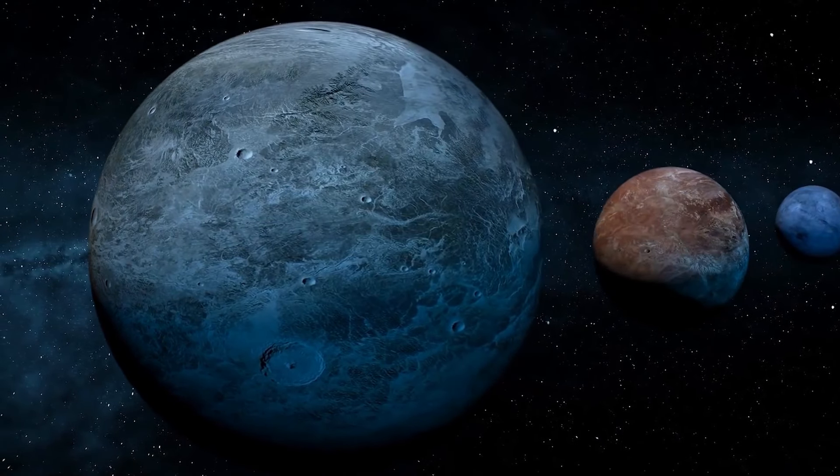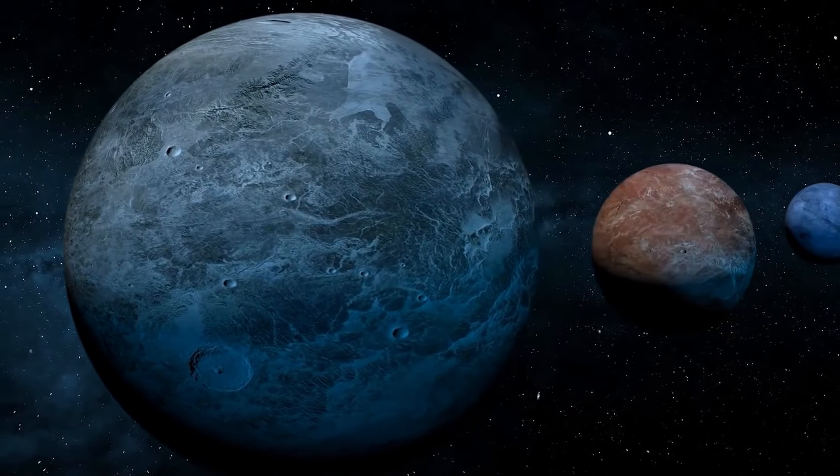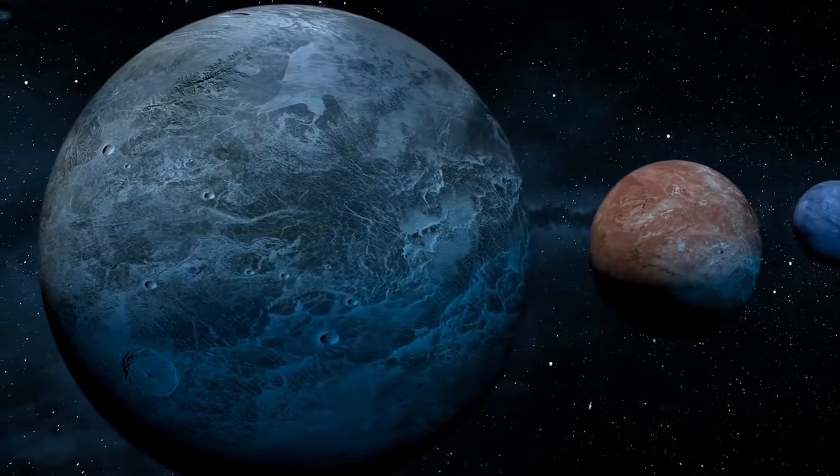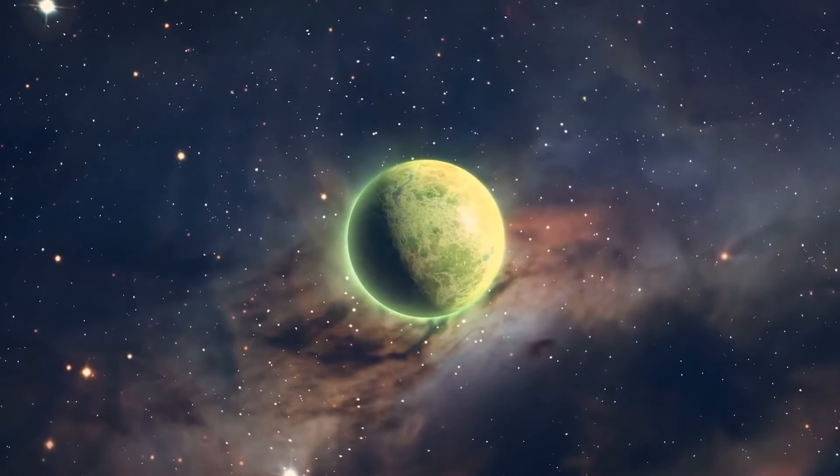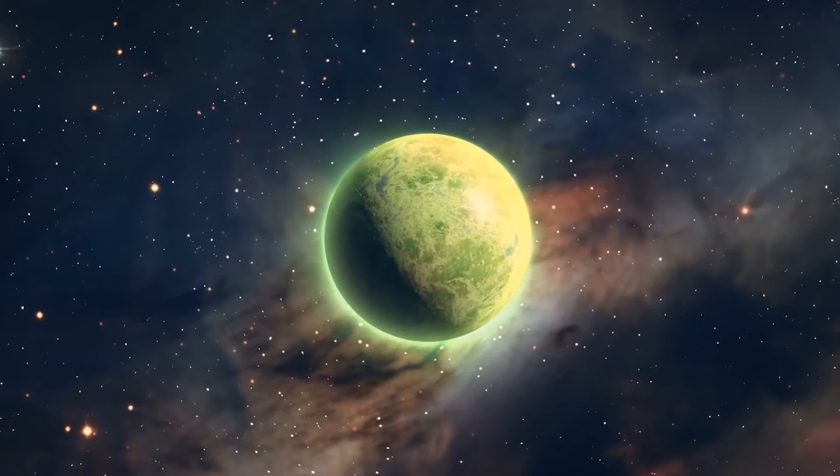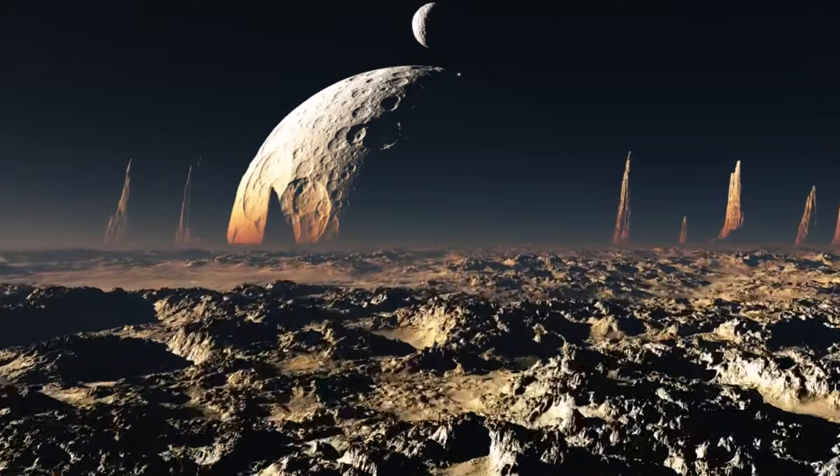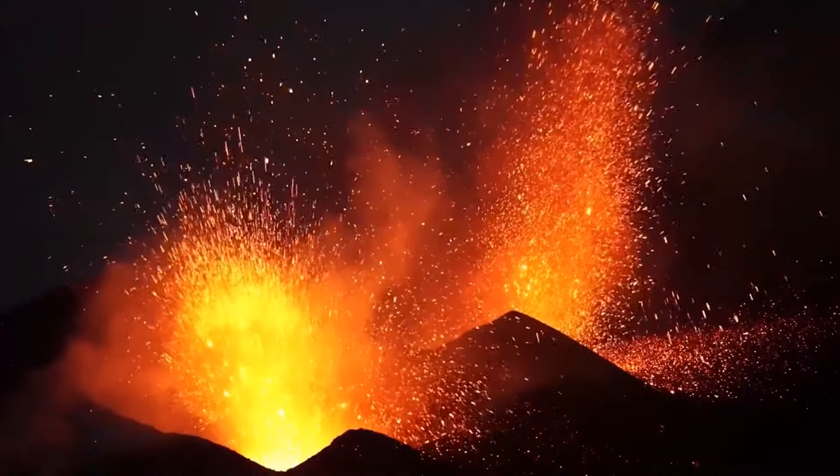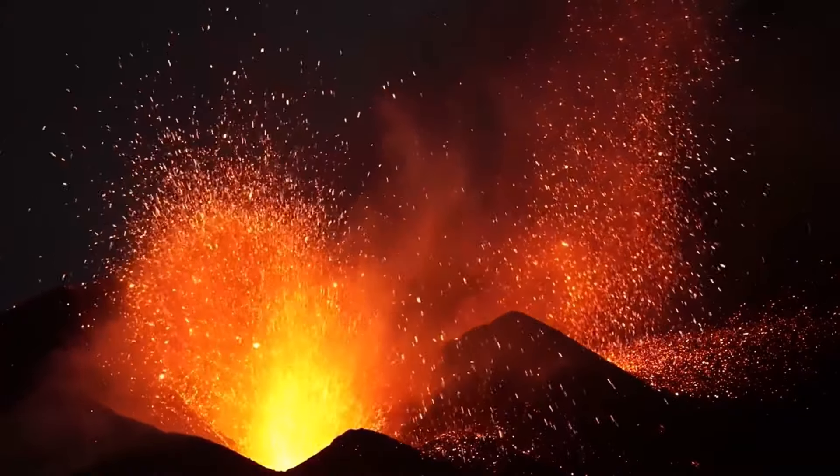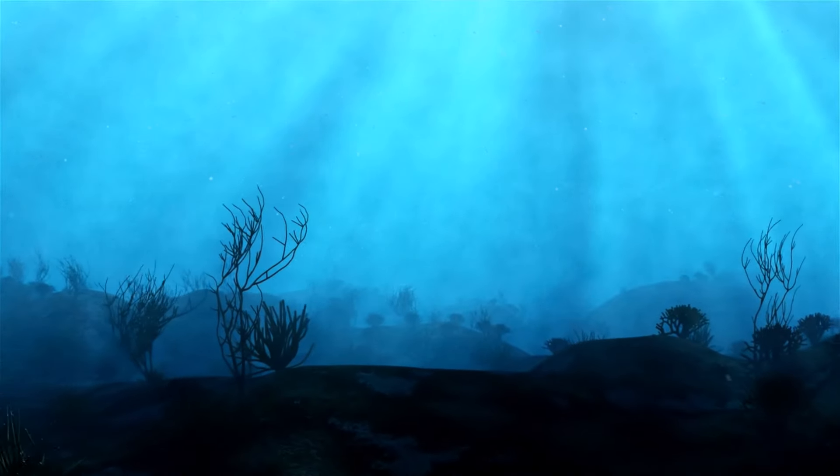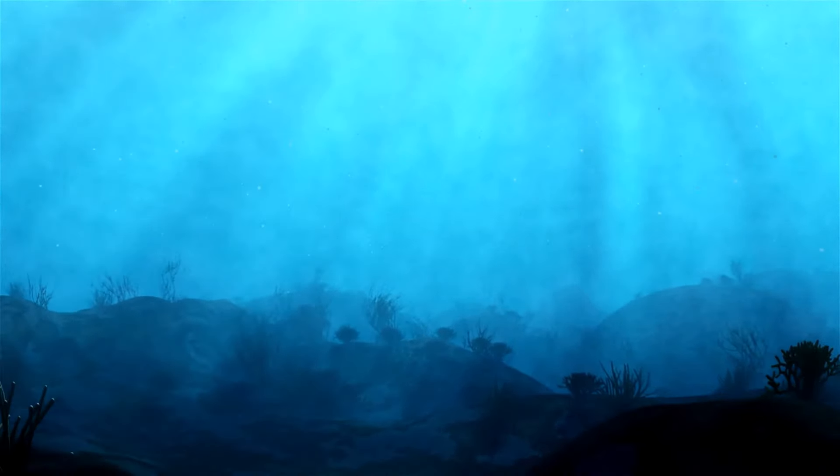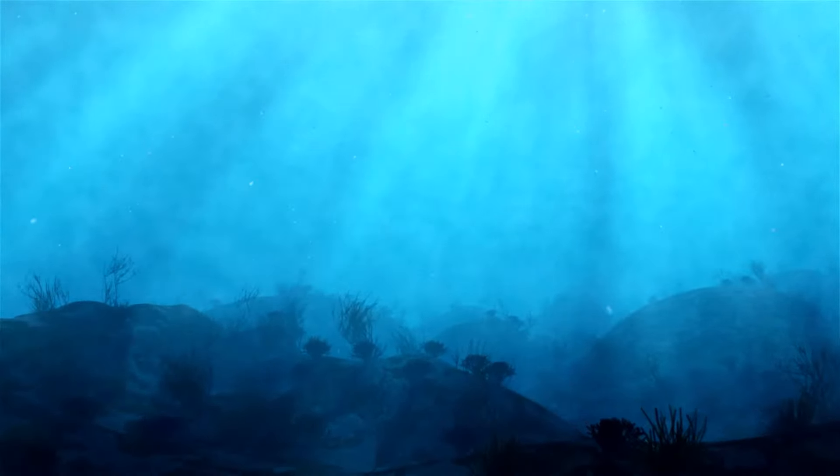To further address this point, the exoplanet reportedly lacks a solid surface. Another research believes that K2-18b may be in a third zone, where planets that resemble a gaseous mini-Neptune but are also rocky planets encircled in superheated, super-compressed seas. Here, the water exists in between being a liquid and gas, and is capped by a steamy water vapor atmosphere.